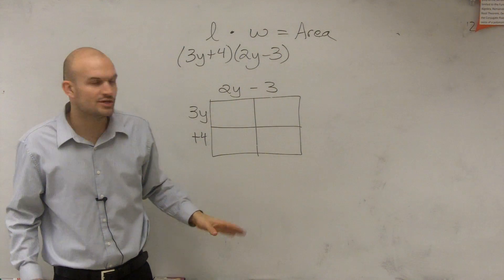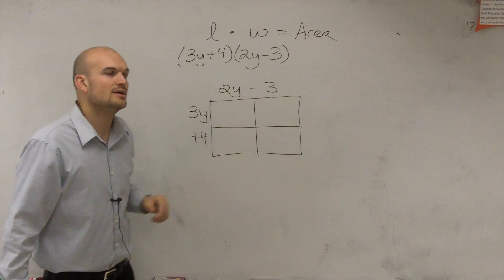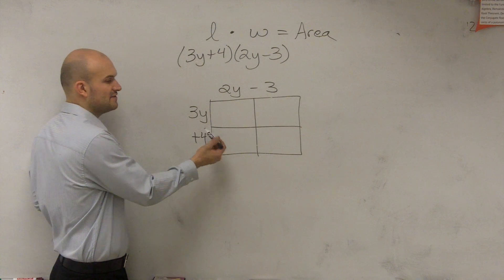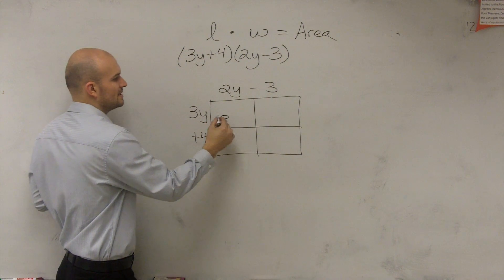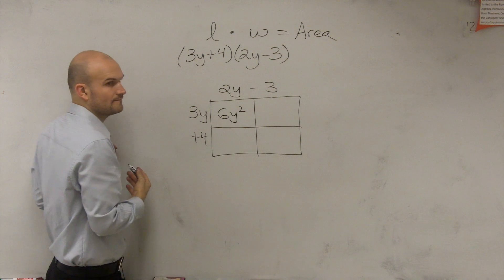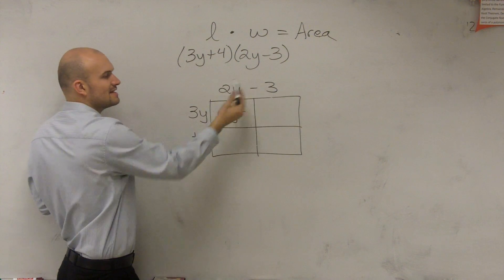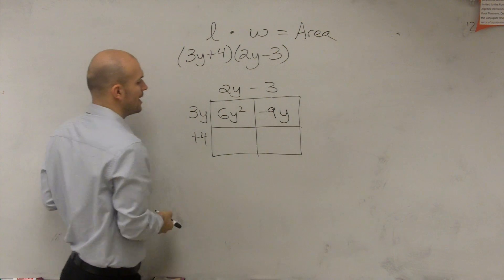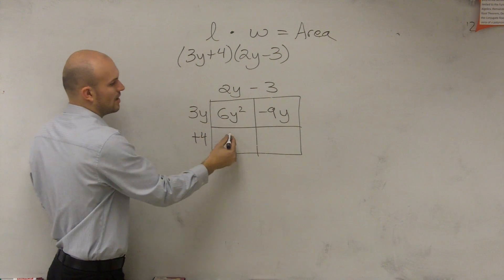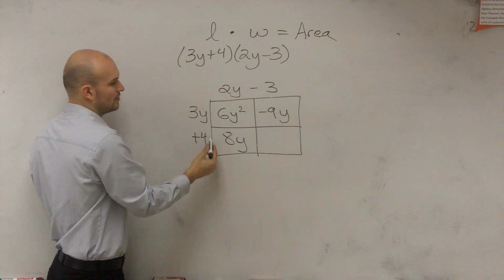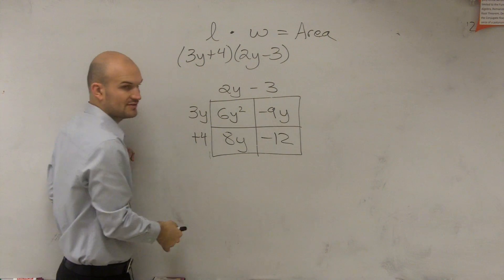And then simply all we're going to do is now just find the area of each little box. So remember, the area of each box is just length times width. 3y times 2y is 6y squared. Length times width: 3y times negative 3 is negative 9y. Length times width: 4 times 2y is 8y. Length times width: 4 times negative 3 is negative 12.